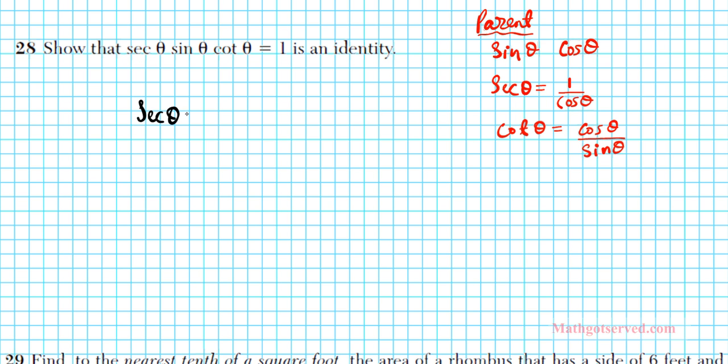Let me rewrite it. We have sec θ sin θ cot θ equals 1. We want to show that the left side is equal to the right side. Secant theta will be expressed as 1 over cosine theta, times sine theta. I like to express this as a fraction, so I write it over 1. Cotangent theta, using a quotient identity, can be expressed as cosine theta divided by sine theta.